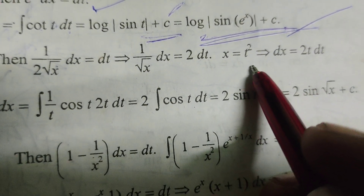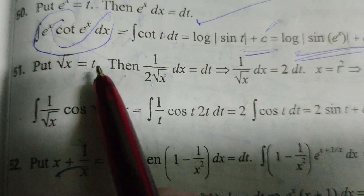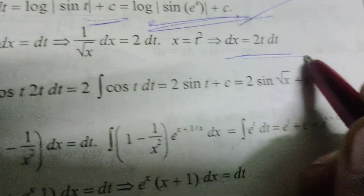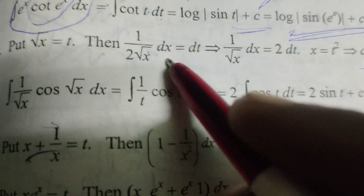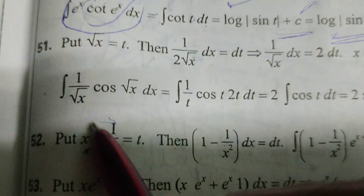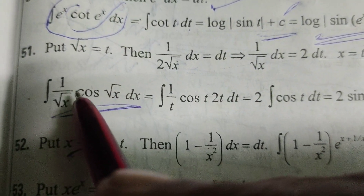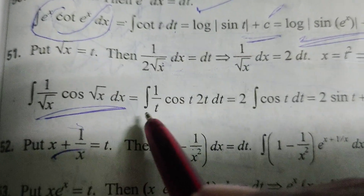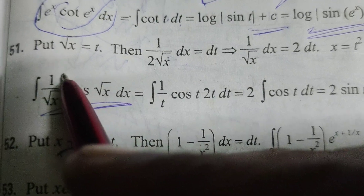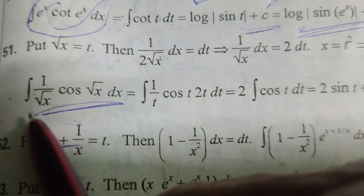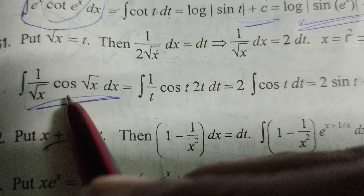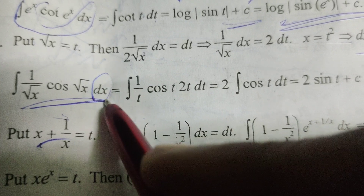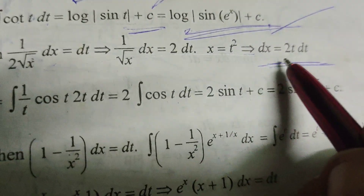Here, x equals t², and √x equals t, then x equals t², so dx equals 2t dt. Substituting in the given evaluated integral: integral of (1/√x) · cos(√x) dx becomes 1/t in place of √x, cos(t) in place of cos(√x), and dx substituted as 2t dt.